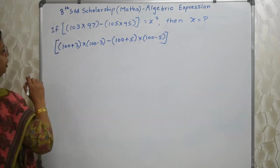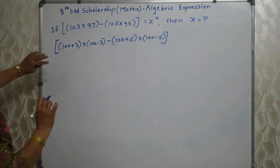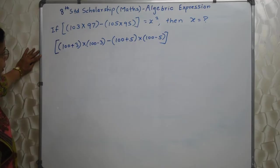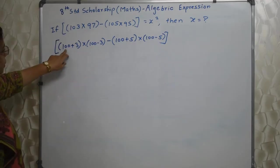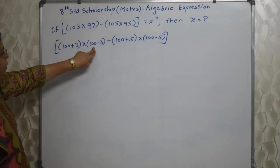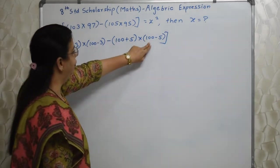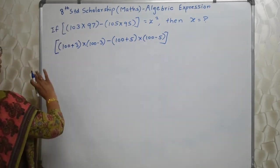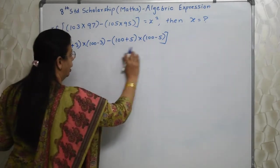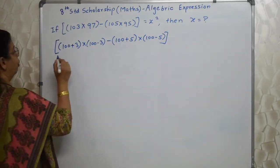So I have just written them in the form of 100 plus something. That's it. Or minus something. The values are same. See? 103, 97, 105, 95. But I have just written them in the form of 100.